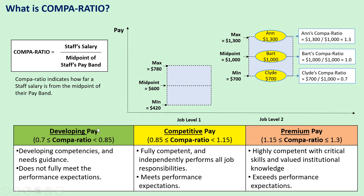So where your salary is depends on your experience and your performance. If your compa-ratio is 0.7, it means that your pay is 70% of the midpoint of the pay band. People here are developing competencies and need guidance, so at this compa-ratio range, the staff may not fully meet the performance expectations. Typically, entry-level or newly promoted staff are placed around compa-ratio 0.7, around the minimum.